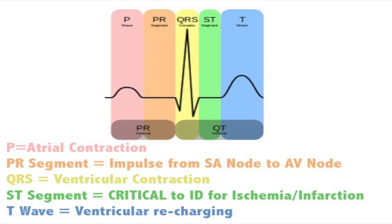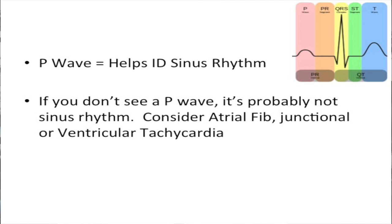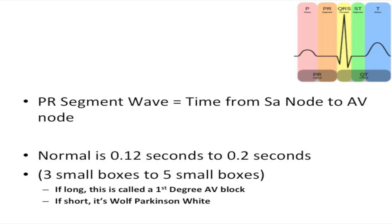Looking back at our colored portion of the EKG, pink, once again, is atrial contraction or atrial depolarization. Orange is the PR segment—it's the impulse traveling from the SA node to the AV node. Yellow is the QRS complex, which suggests ventricular contraction. Green is the ST segment—it's critical, critical, critical to identify ischemia and infarction. We're going to talk to you about how to draw that baseline that you have to be 99% consistent with. And the blue is ventricular recharging or ventricular repolarization. So again, the pink portion is the P wave. It helps identify sinus rhythm. If you don't see a P wave, it's probably not sinus rhythm. Consider AFib, junctional rhythm, or VTAC. Orange is the PR segment, the time from the SA node to the AV node. Normal is 0.12 to 0.20 seconds—three small boxes to five small boxes. If it's long, it's a first-degree heart block. If it's short, it suggests WPW.